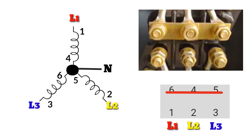As the star connection provides a low voltage across each winding, the current will be less. For this reason, an induction motor is started with star connection to reduce the starting current by reducing the voltage across the windings.